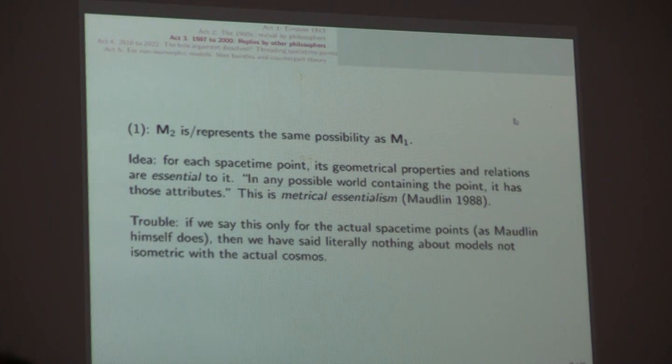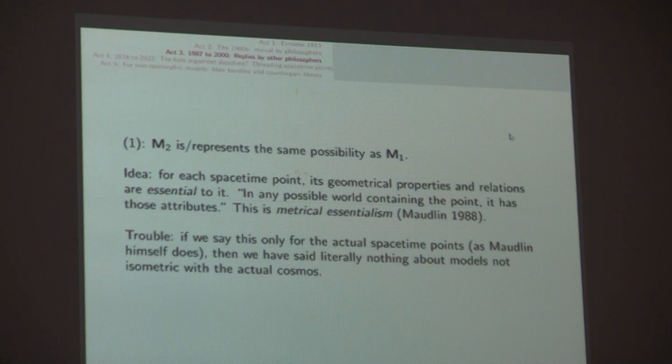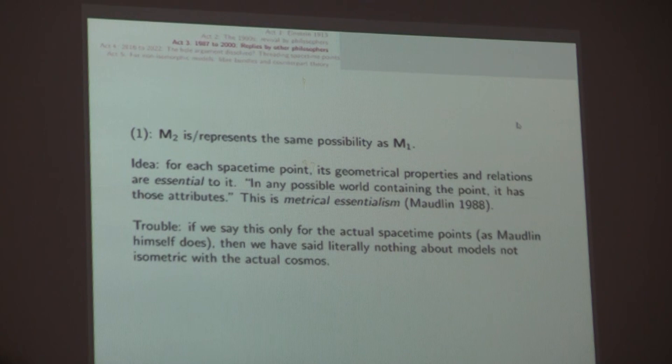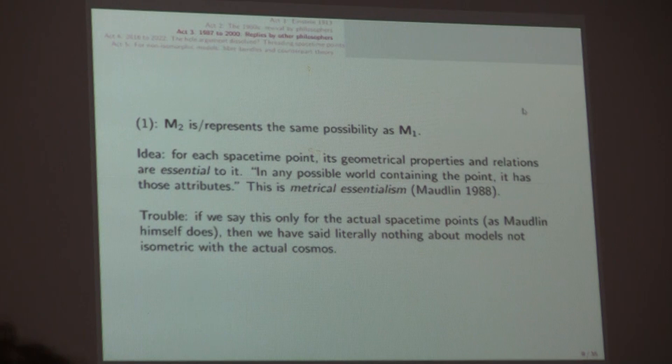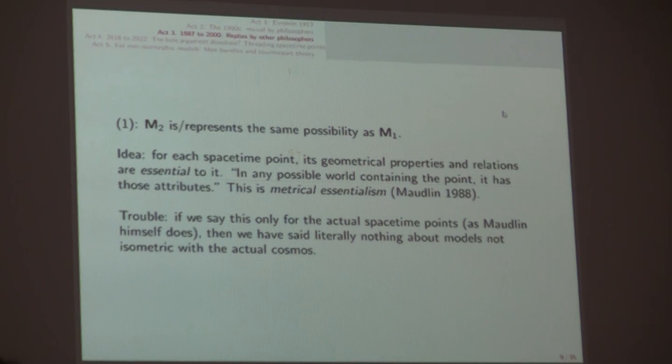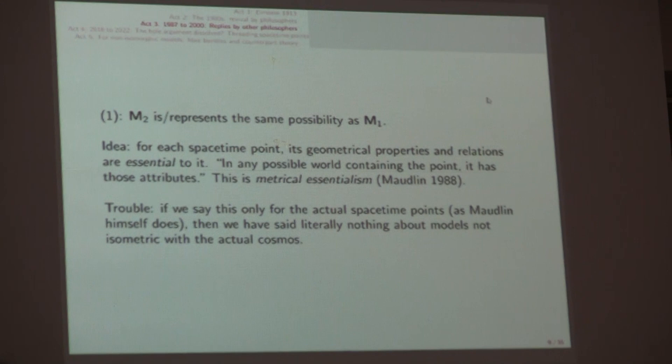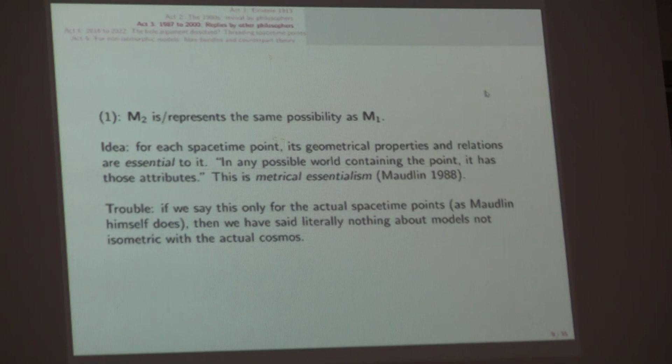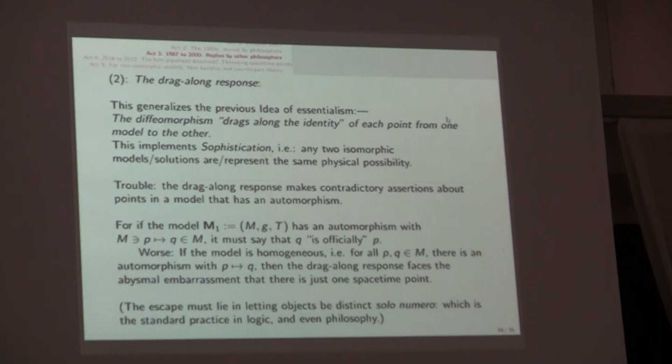You've got objects but you're denying that the which-is-which-ness is factual. So there are four developments worth taking a glance at. One is saying that the second model produced by the drag-on represents the same possibility as the first. So you're really saying that for each spacetime point its geometrical properties and relations are in philosophy jargon essential to it. In philosophy jargon we talk about possible worlds for possibilities. In any possible world containing this point it has those attributes.